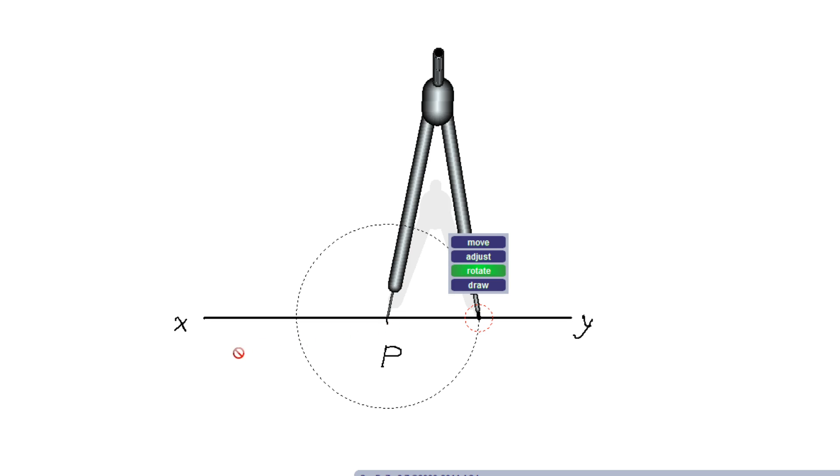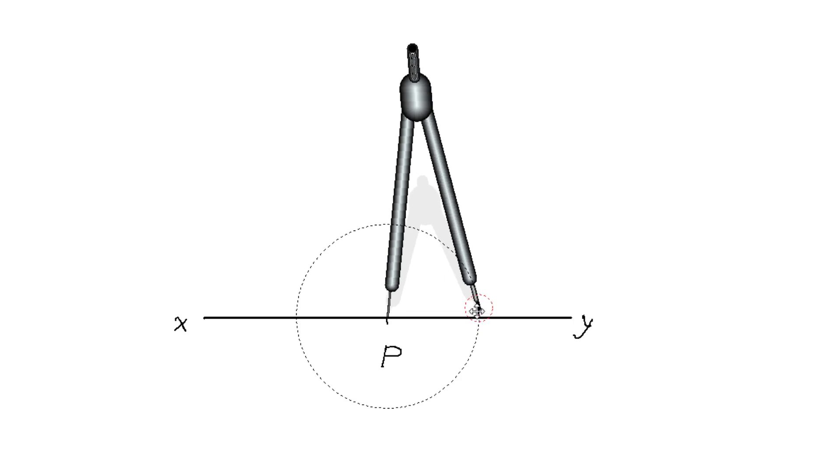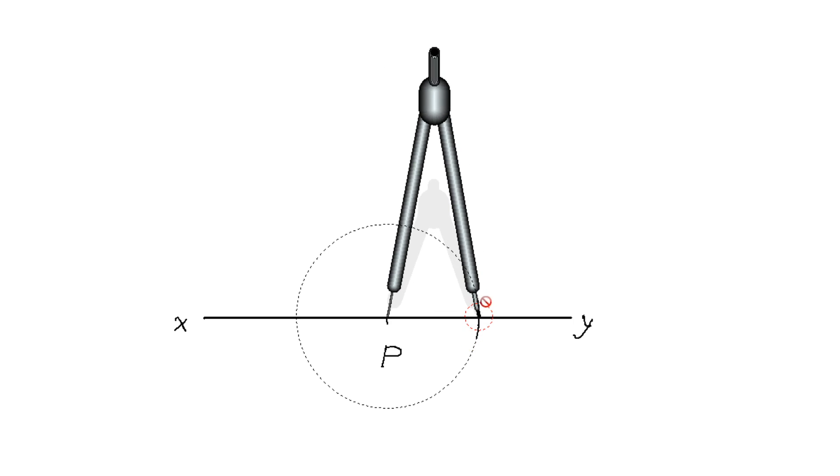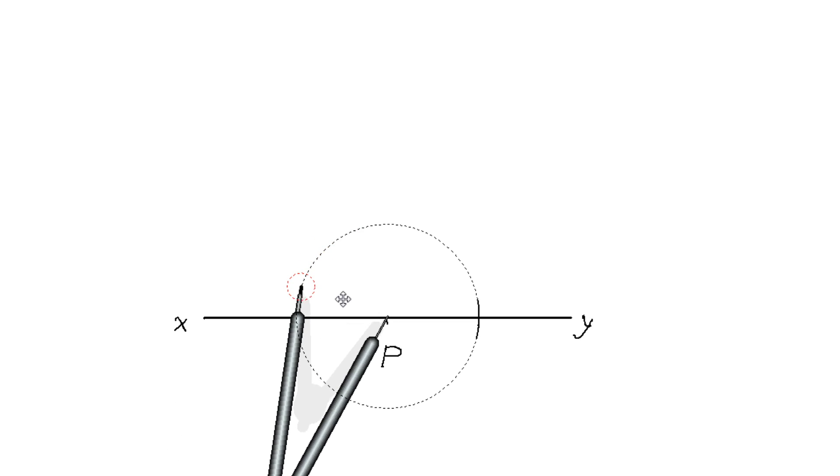Take the compass, put it at point P, and draw one arc on the side of X. Similarly, with the same radius, draw another arc on the side of Y. So I have drawn these two arcs on both sides.